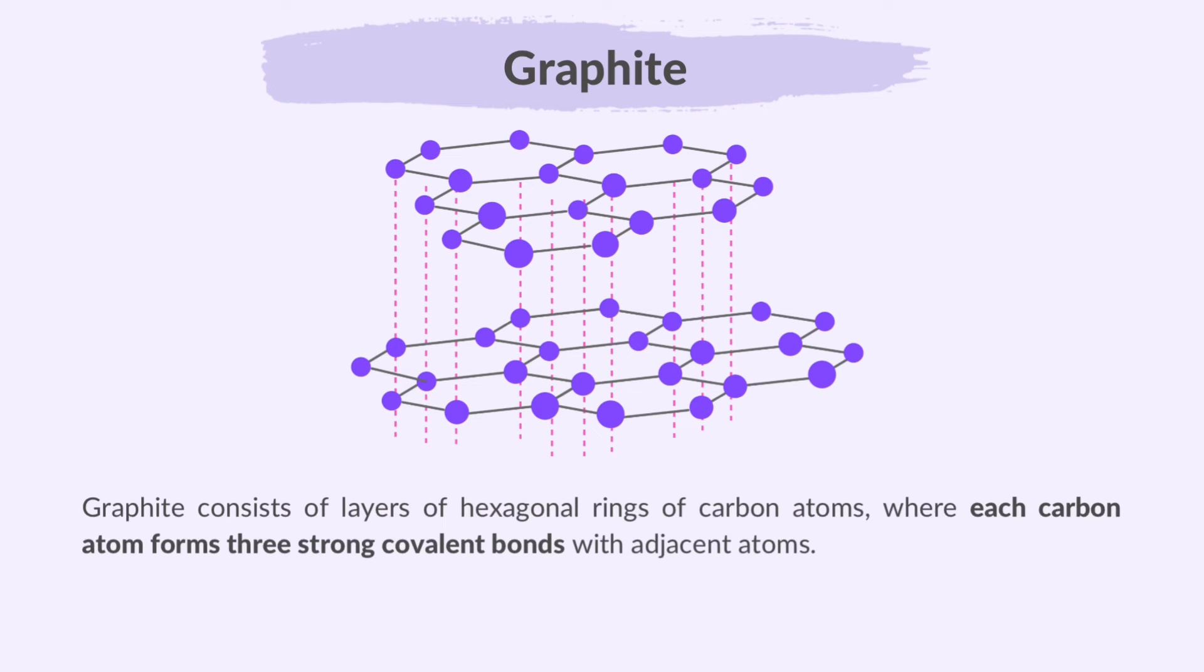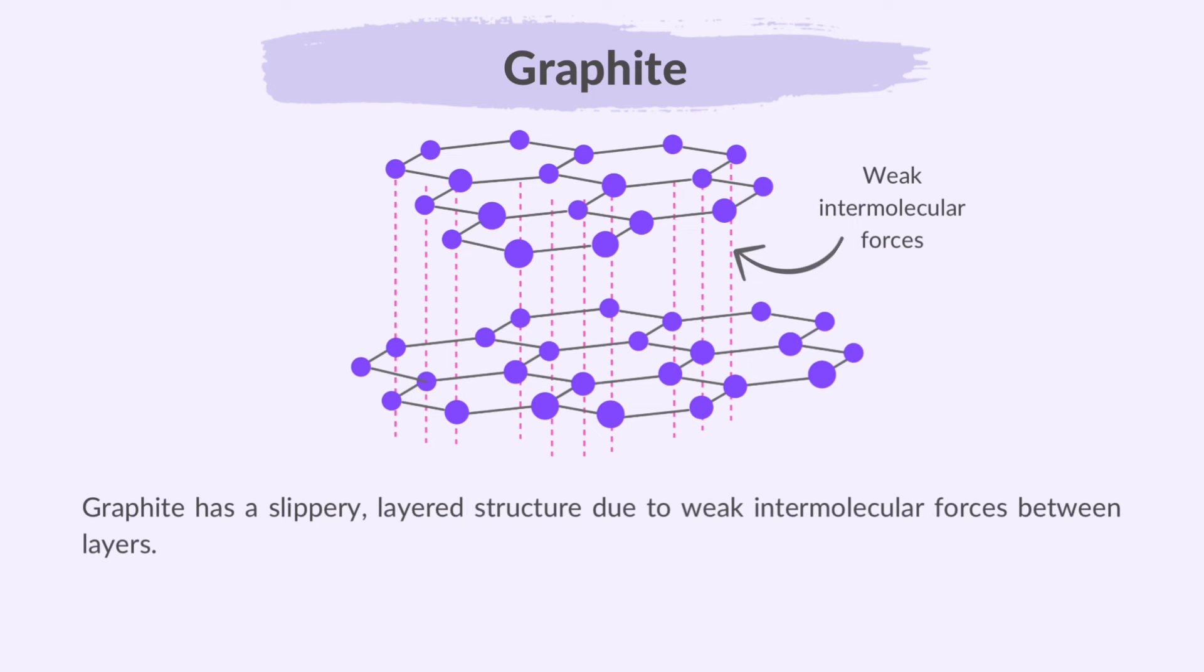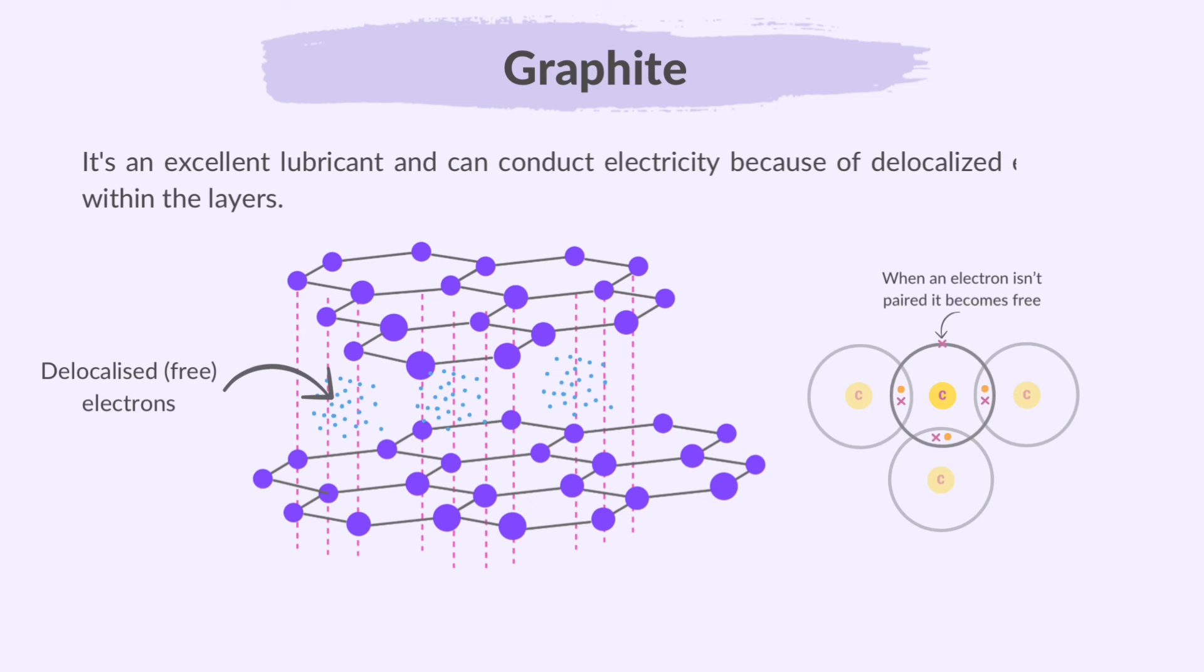Graphite consists of layers of hexagonal rings of carbon atoms, where each carbon atom forms three strong covalent bonds with adjacent atoms. Graphite has a slippery, layered structure due to weak intermolecular forces between layers. It's an excellent lubricant and can conduct electricity because of the delocalized electrons within the layers.